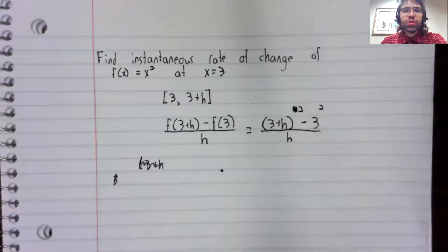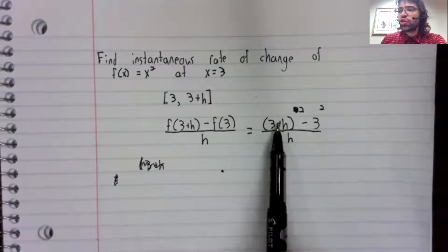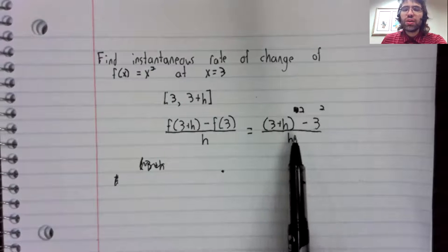So what we're going to do is simplify it. Here's f of three plus h. Here's f of three. And here's h.